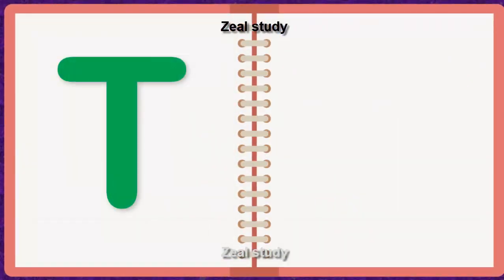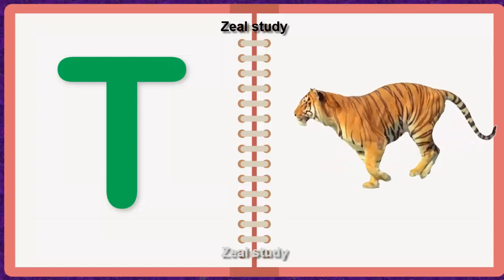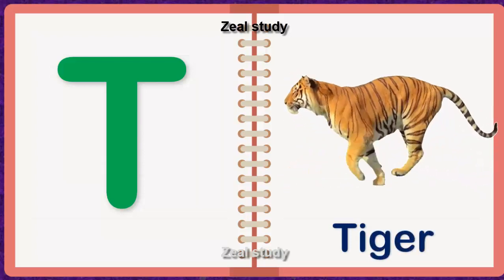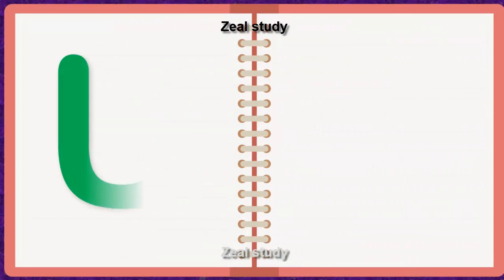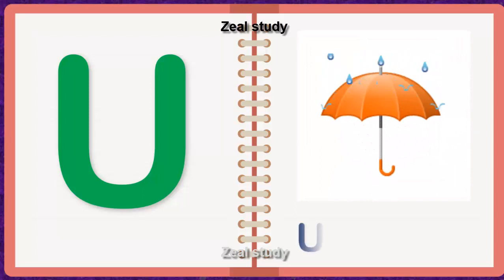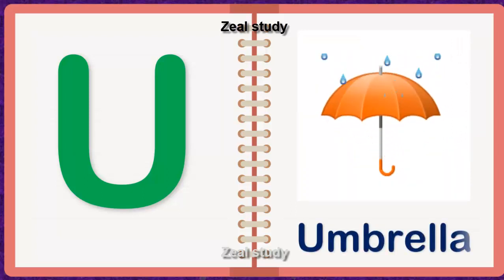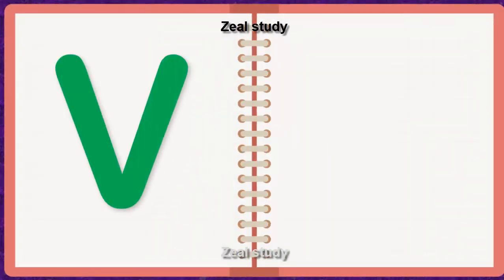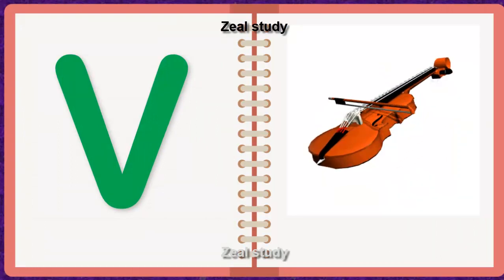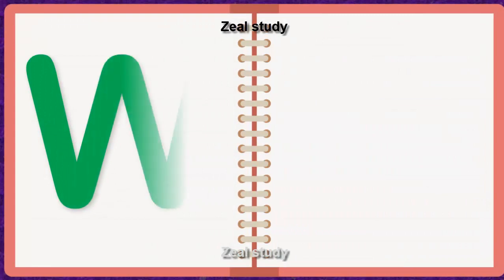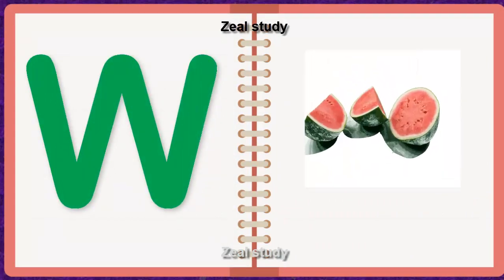T for Tiger. T, I, G, E, R. Tiger. U for Umbrella. U, M, B, R, E, L, L, A. Umbrella.